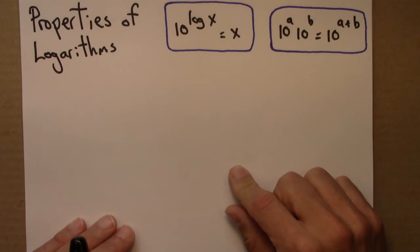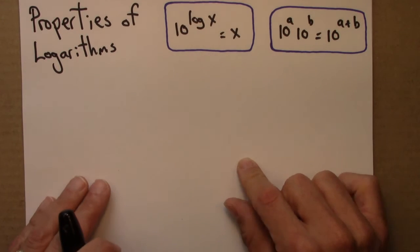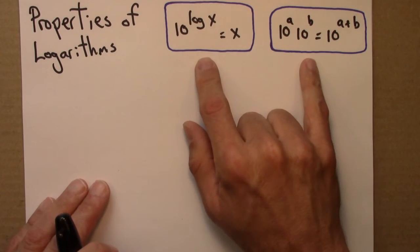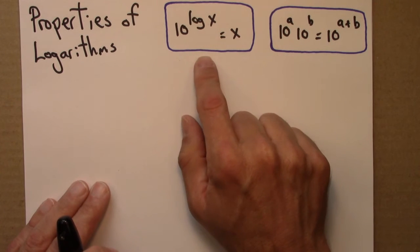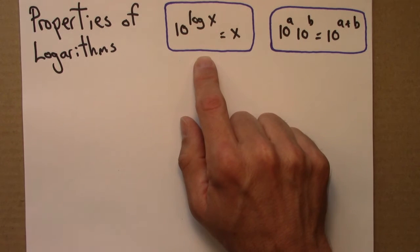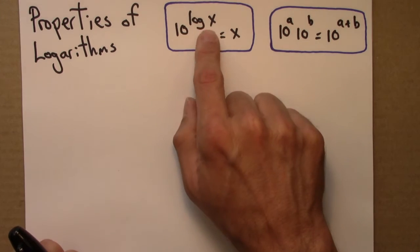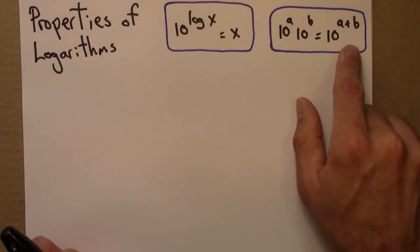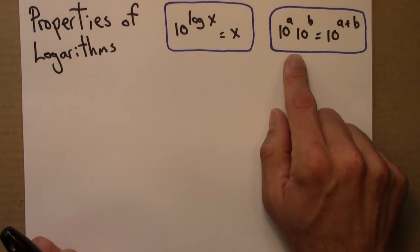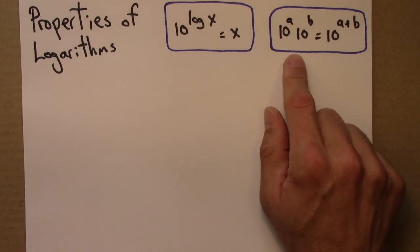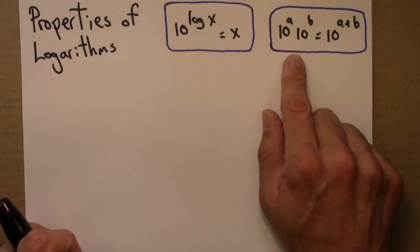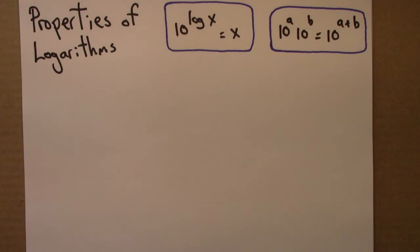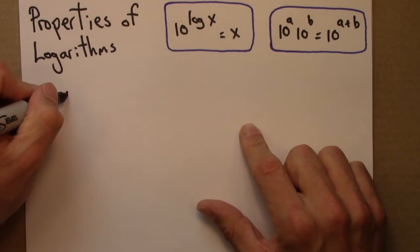Next, I'll talk about some important properties of logarithms. All of these properties follow from these two relationships: the defining equation for what the logarithm is, and a property of exponents that follows immediately from the definition of exponents.